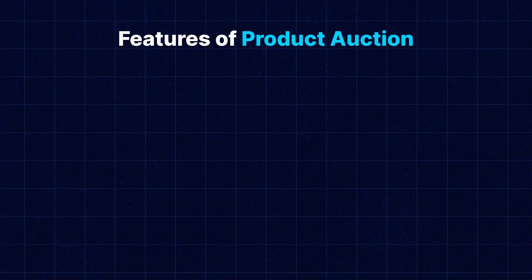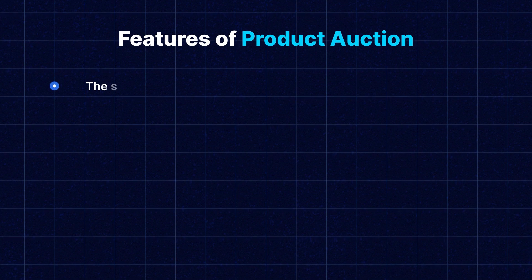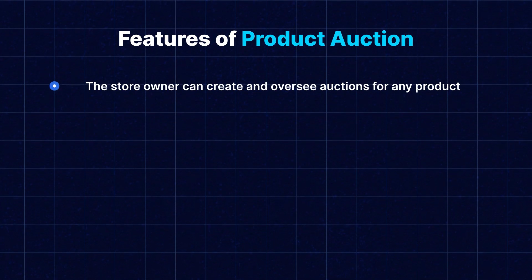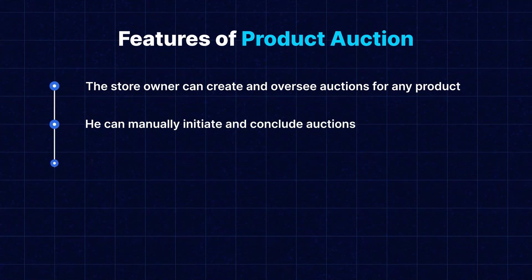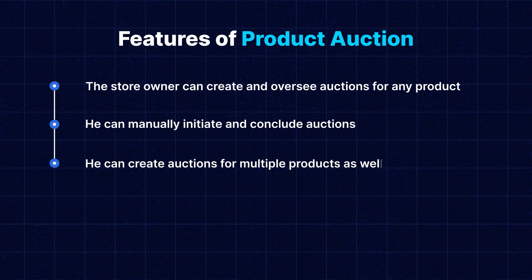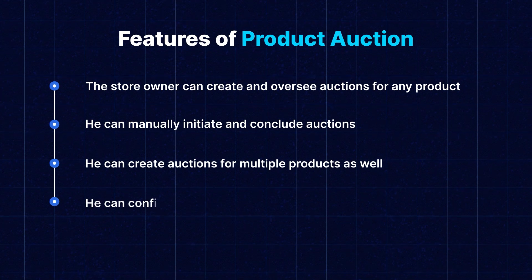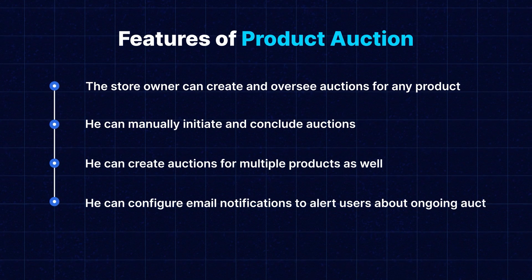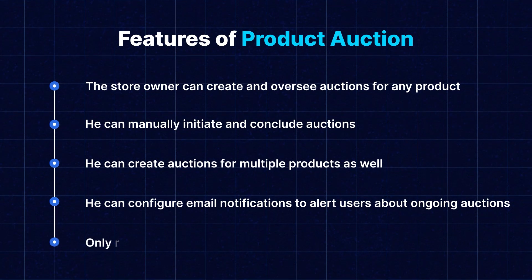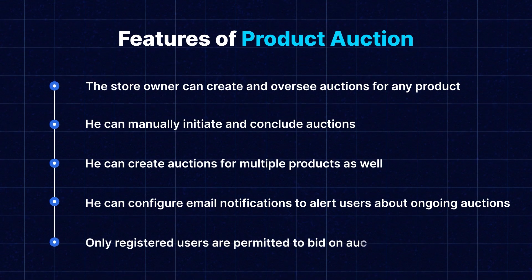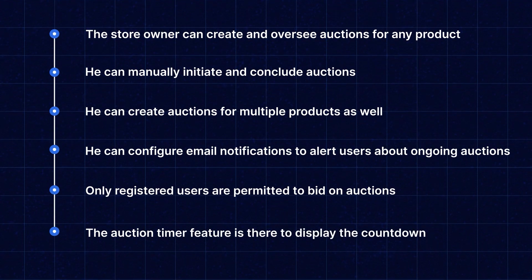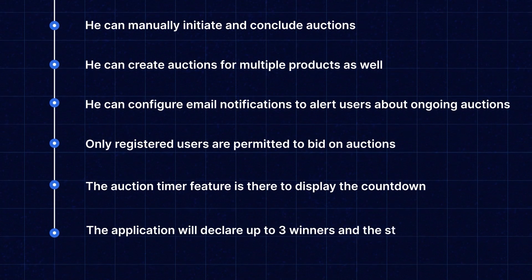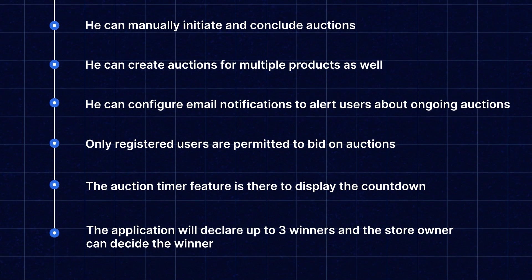Now, what are the features of Product Auction? The store owner can create and oversee auctions for any product. He can manually initiate and conclude auctions, and can create auctions for multiple products as well. He can configure email notifications to alert users about ongoing auctions. Only registered users are permitted to bid on auctions. The auction timer feature displays the countdown. Once the auction concludes, the application will declare up to 3 winners and the store owner can decide the winner.